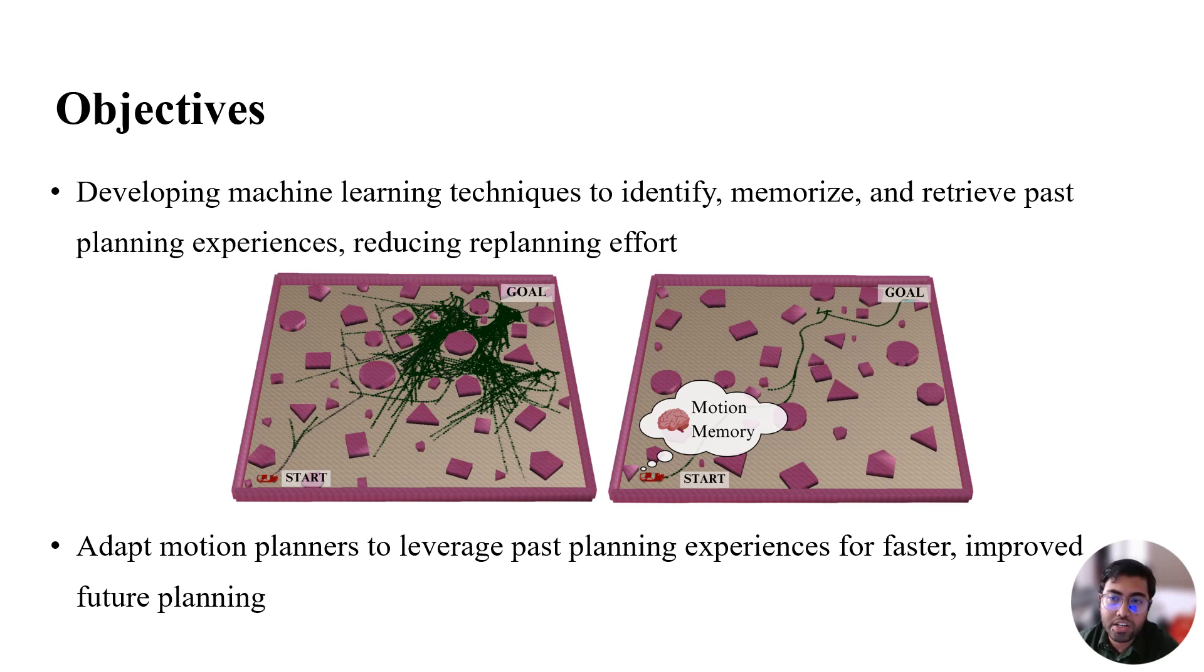Our primary objective is to overcome the limitation of traditional motion planners in order to significantly enhance their efficiency. First, we will develop machine learning techniques to identify, memorize and retrieve the past planning experiences. By leveraging these past experiences, we aim to minimize the need for time-consuming and resource intensive re-planning from scratch.